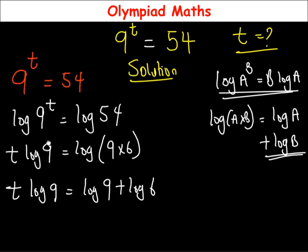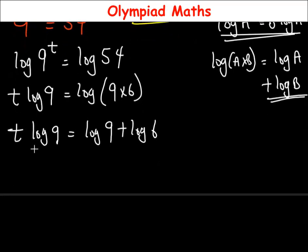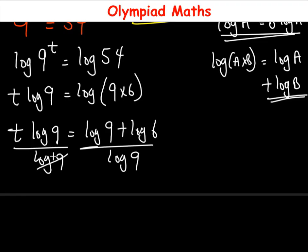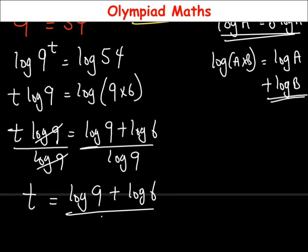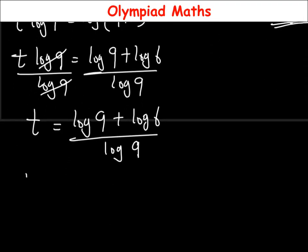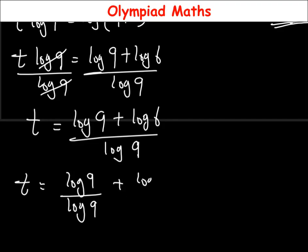Such that to solve for t, we can divide both sides by log 9 over log 9. So log 9 divided by log 9 gives us t equal to log 9 plus log 6, all over log 9.